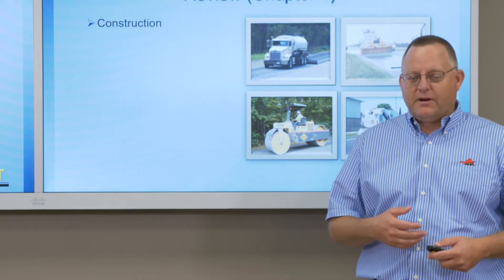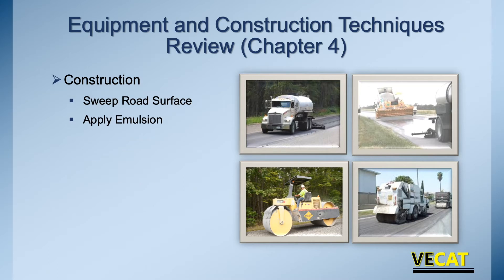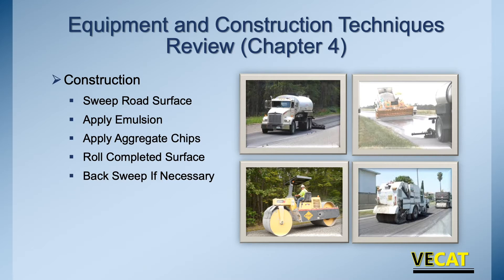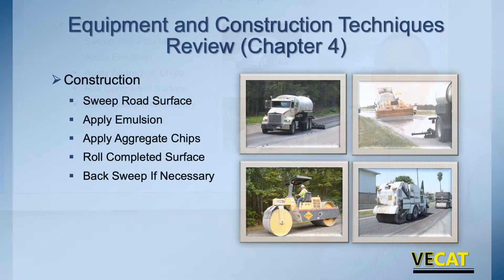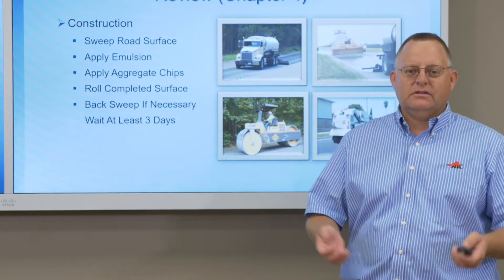As we go through the construction process, we've got our traffic control in place, the road swept clean, and the surface prepared. We apply the emulsion with the distributor, then apply the aggregate chips using the chip spreader to get chips onto that emulsion. Then we roll it — bringing our rollers out to make sure the chips are embedded into the emulsion. After that, we back sweep to get loose rocks off before opening to traffic, reducing whip-off and stone loss. We should wait about three days, then sweep one more time to make sure everything is seated and ready.